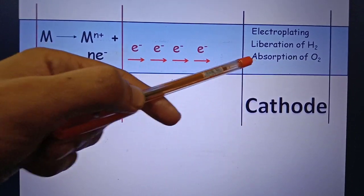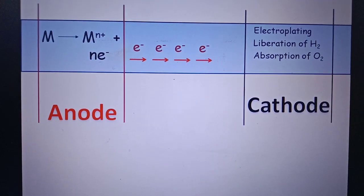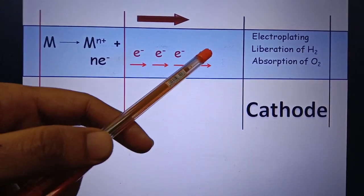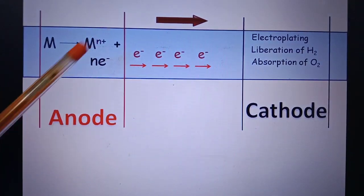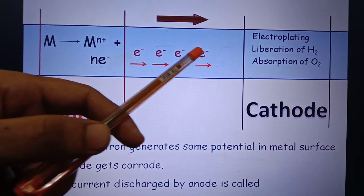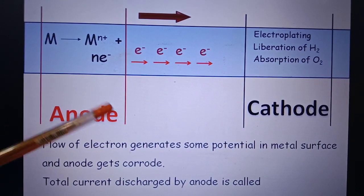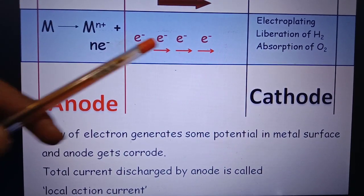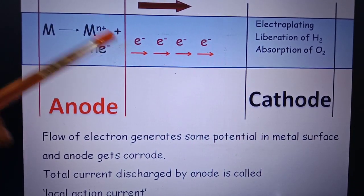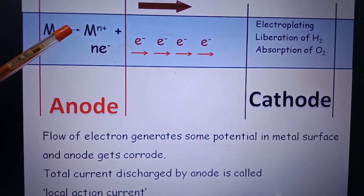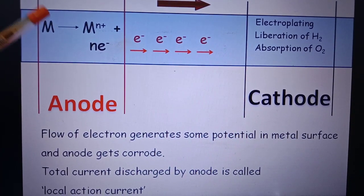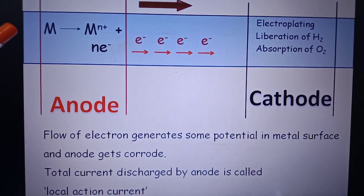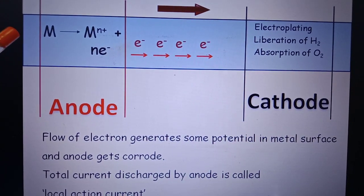At the cathode these electrons will be used for three reactions: electroplating, liberation of hydrogen, and absorption of oxygen. As electrons are getting consumed the process will continue, and this flow of electrons generates some potential on the metal surface. Because of this flow of electrons the metal will get corroded. This total current discharged by the anodic area is called local action current.